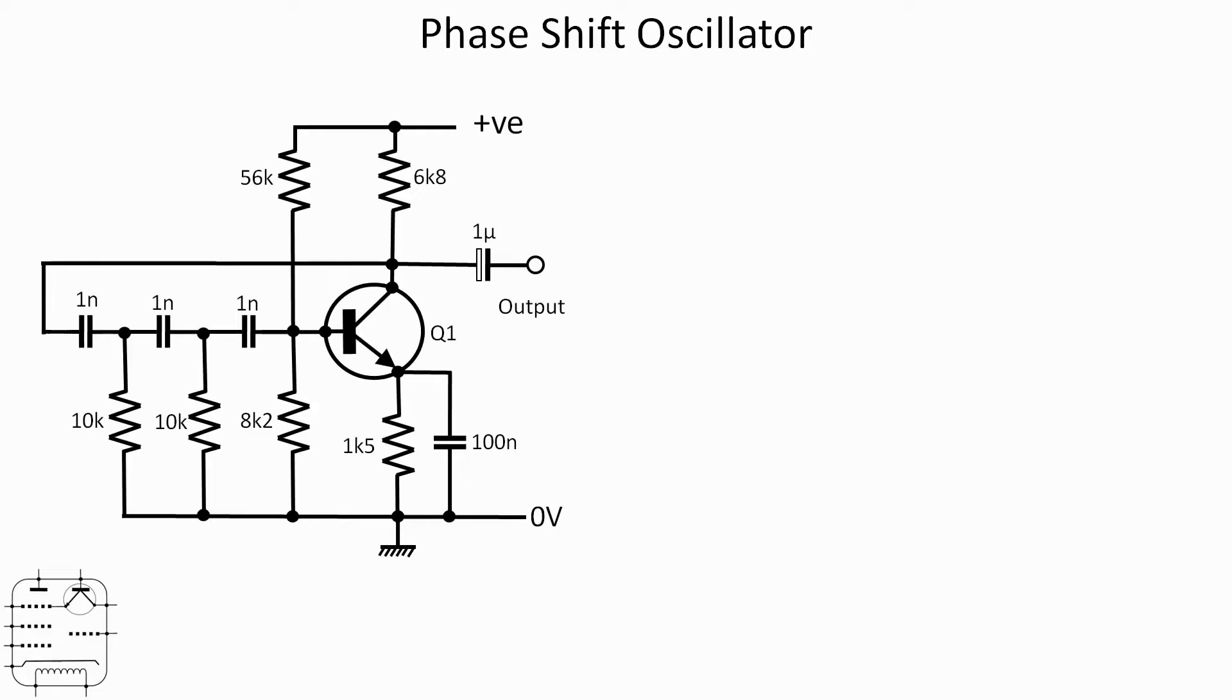The output of Q1 is taken from the collector through that one microfarad capacitor you can see on the right hand side of the circuit diagram there. Going back to the left from that connection is the feedback loop that goes back and is fed into the base through the three one nanofarad capacitors, and that's what gives you the phase difference.